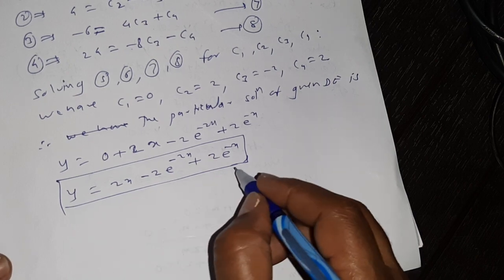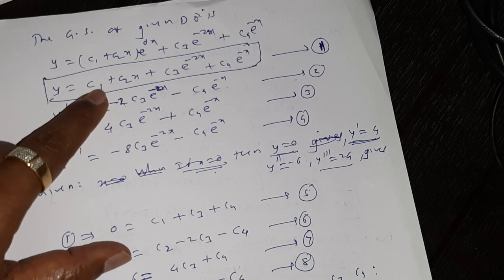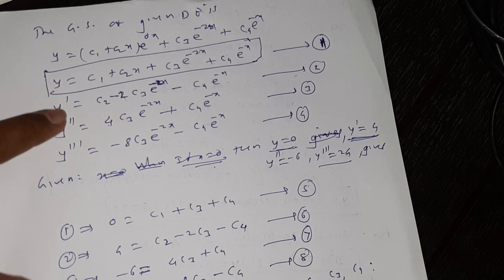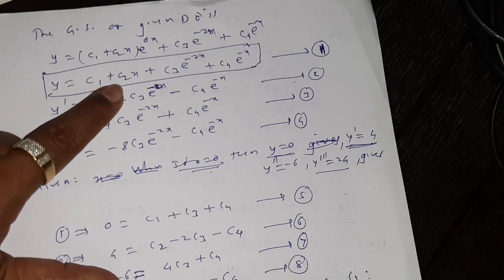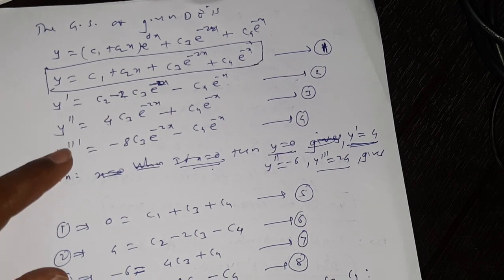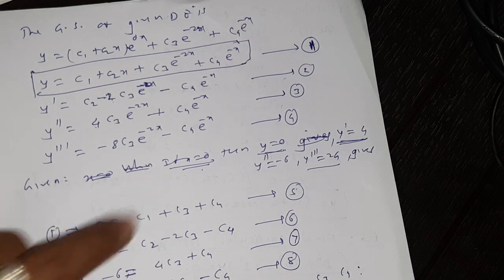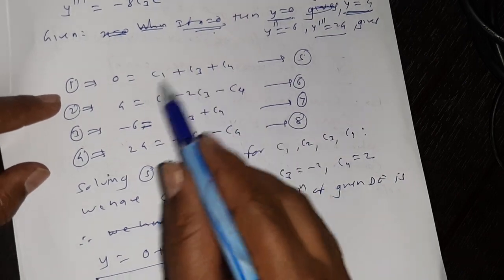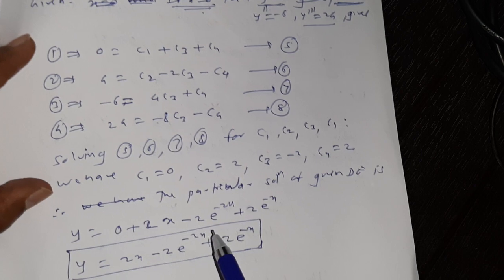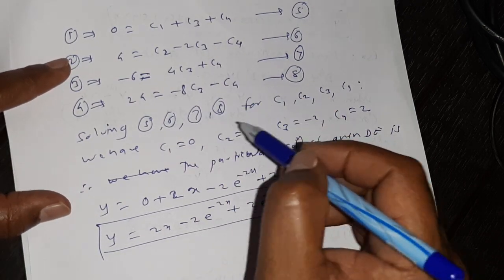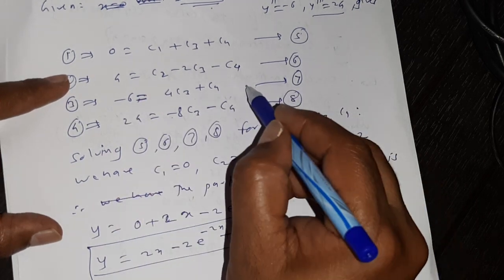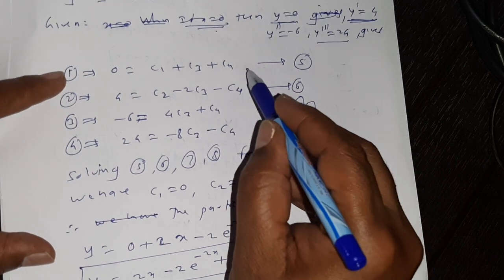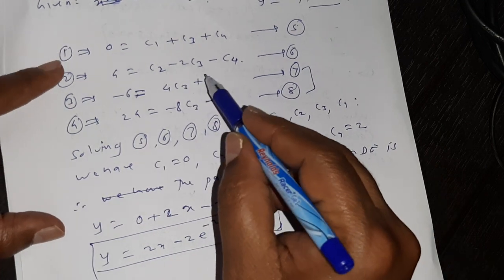This is the particular solution, not the general solution. To find the particular solution, first find the general solution and then obtain the values of the constants using the given conditions. We solve these equations using Gauss elimination or by adding and subtracting — from equations 7 and 8 find c3 and c4 first, then substitute into equations 5 and 6 to get c1 and c2.